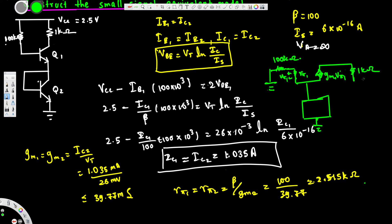For the Q2 part, rπ2 is placed with voltage vπ2 across it, followed by a dependent current source gm2·vπ2 pointing downward. This completes the equivalent small-signal model of the circuit.